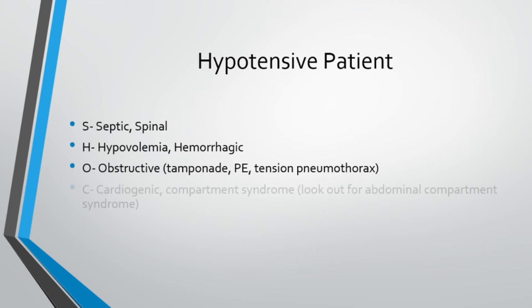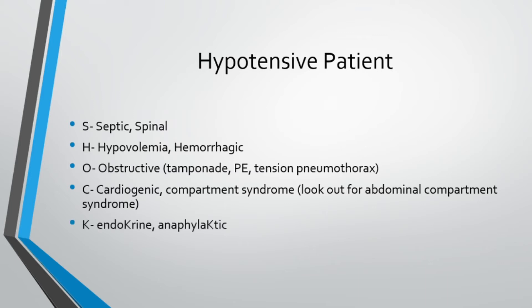C stands for cardiogenic shock and compartment syndrome, which includes abdominal compartment syndrome — often forgotten. Causes include massive intra-abdominal bleeding, retroperitoneal hemorrhage, and gut edema. Always keep this in mind with your trauma patient ejected off a motorcycle. K stands for endocrine and anaphylactic. D stands for drugs — opiates, beta blockers, erectile dysfunction medications like Cialis or Viagra, and diuretics like Lasix or HCTZ, just to name a few.